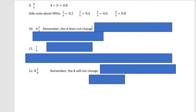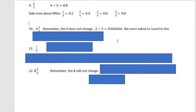Four and two thirds, remember the four does not change. If I divide two by three though, we get 0.6666. And we're asked to round to the hundredths. So what should I get as a final answer?